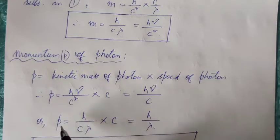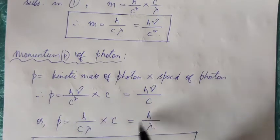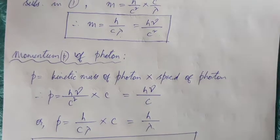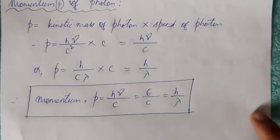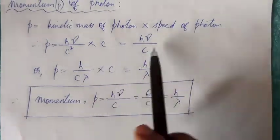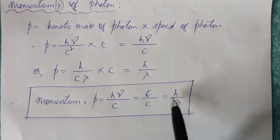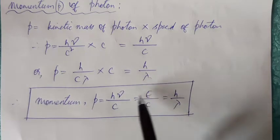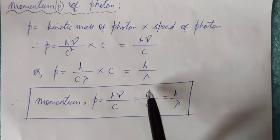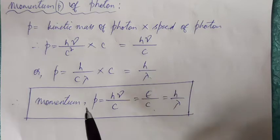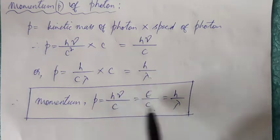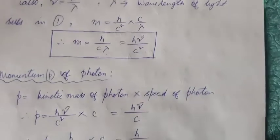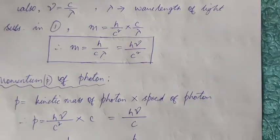Do pay attention to this because we will need this. Momentum is h by lambda. There are different expressions for momentum also. So, momentum is h nu by c from here which h by lambda from here also. Since h nu is energy of photon E, this is also E by c. So this is the expression for different expressions for momentum of a photon and mass of a photon.